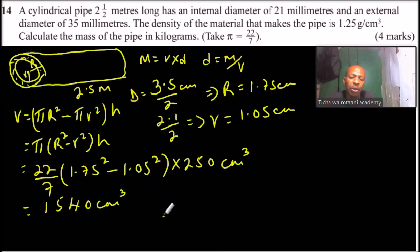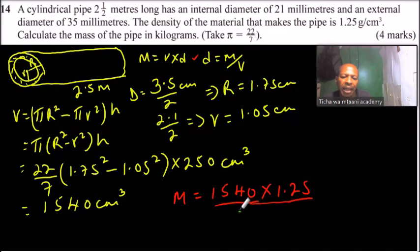Now you have the volume. So what we need is the mass. And we have said mass is equals to volume times density. So this is 1,540 multiplied by 1.25, that is the density given here. That will give you mass in grams. You divide by 1,000 to convert that grams into kilograms.